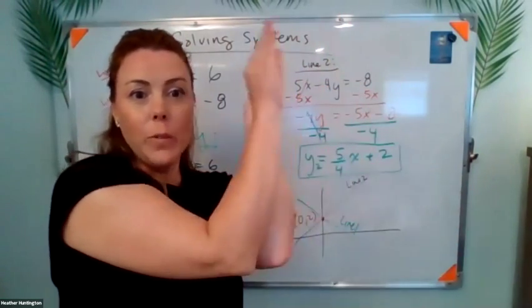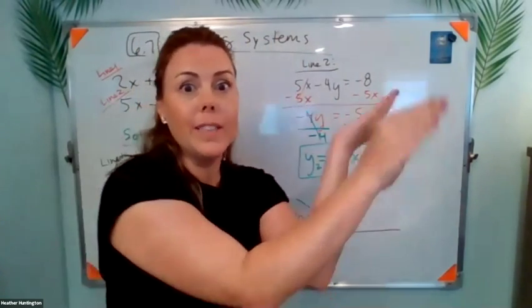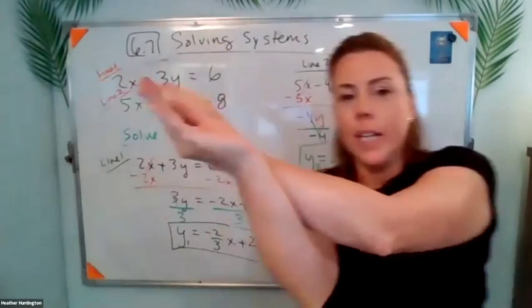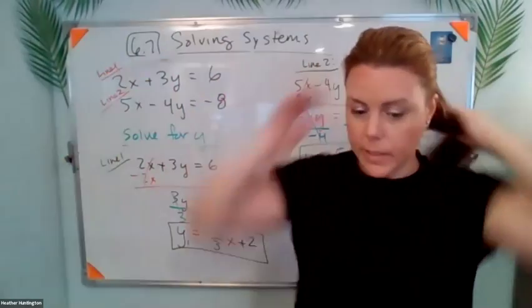So it's right on top of it. It could be anywhere in space, but it's not even just parallel to the line. It's right on top of it. So it's going to have an infinite number of solutions. And that one's called a dependent system.